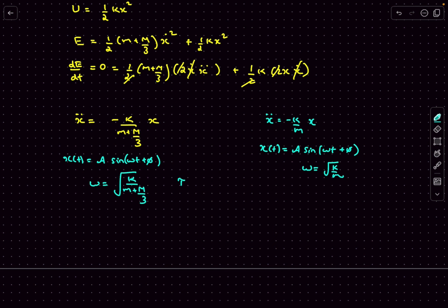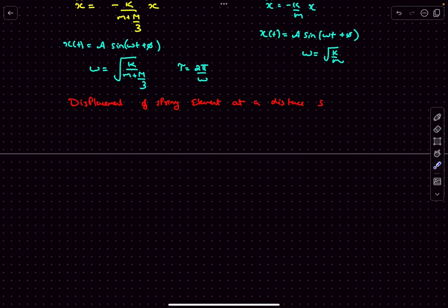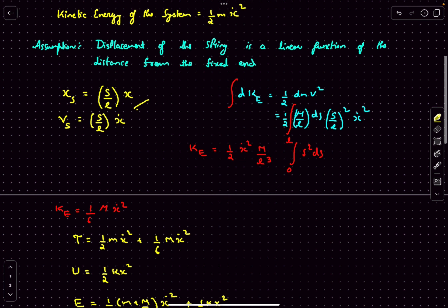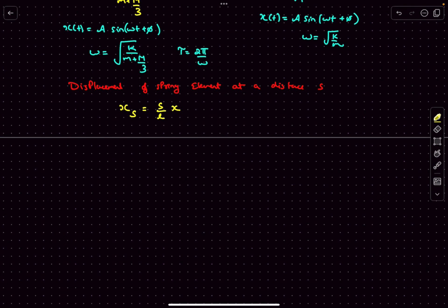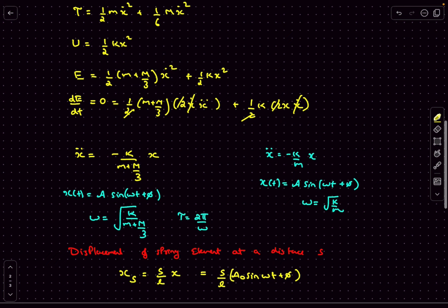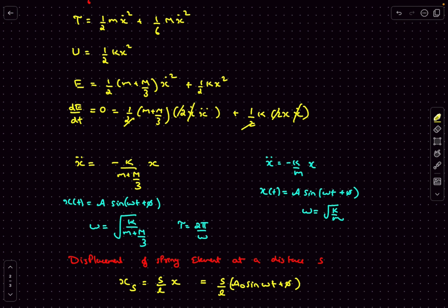The time period is simply T = 2π/ω. Now if we want to write the displacement of the spring element at a distance s from the wall, it comes out to be (s/L)·A₀·sin(ωt + φ). You can also compute the velocity by differentiating this with respect to time. That was it for this video — if you have any doubts you can comment down below. Thanks for watching!